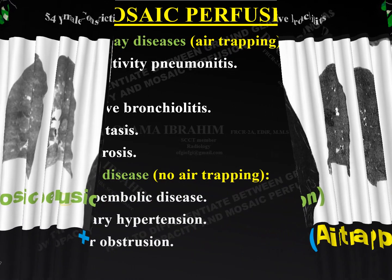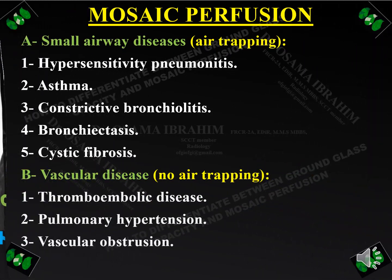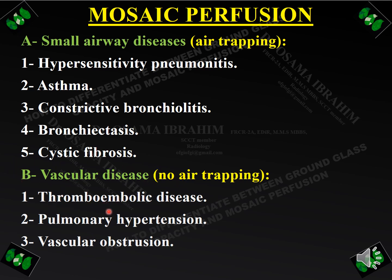What is the list of differential diagnoses for airway disease causing mosaic perfusion and air trapping? These include hypersensitivity pneumonitis, asthma due to filling of the bronchioles with secretions, constrictive bronchiolitis, bronchiectasis, and cystic fibrosis. However, if there is no air trapping on expiratory film and mosaic perfusion is present in the low attenuation area, consider vascular disease — thromboembolic disease, pulmonary hypertension, or vascular obstruction.